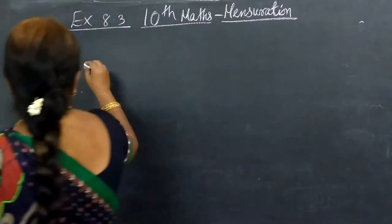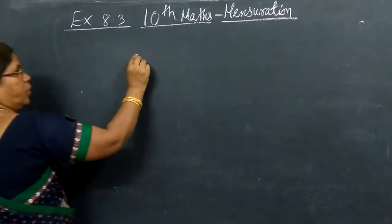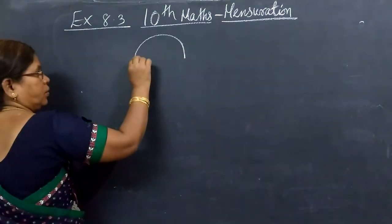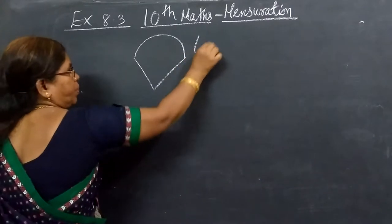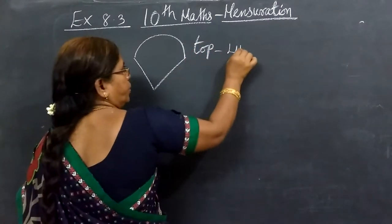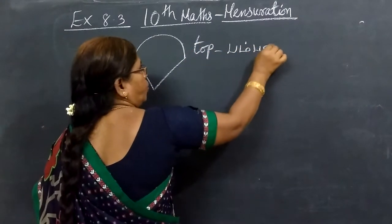First, the top. You have to find the surface area of the top. Top is what? Bambaram. Clear. The bambaram is the total surface area.